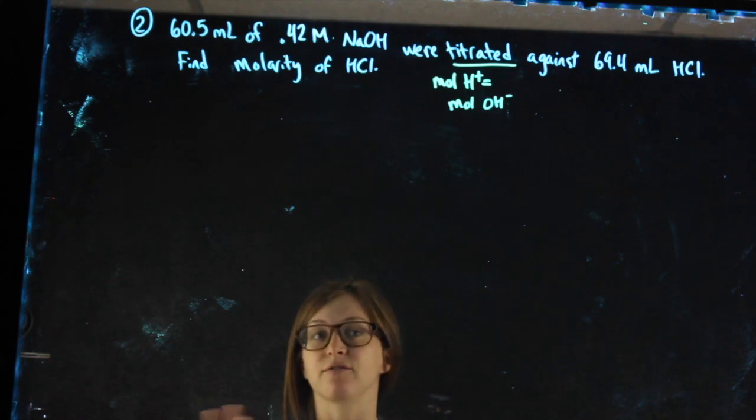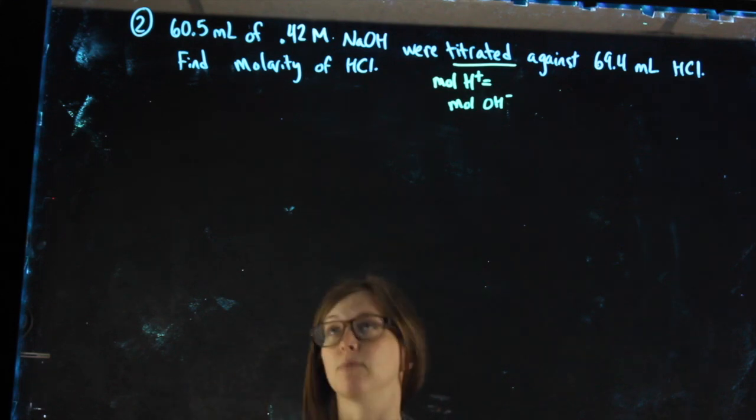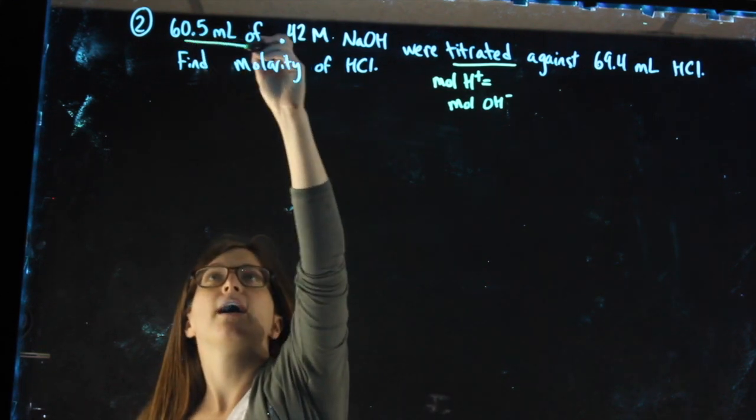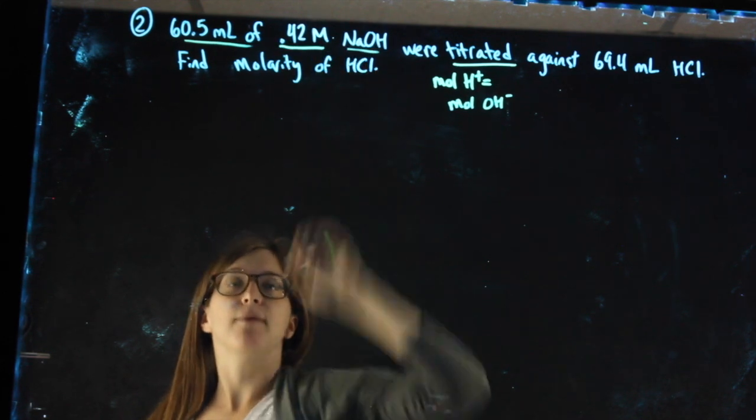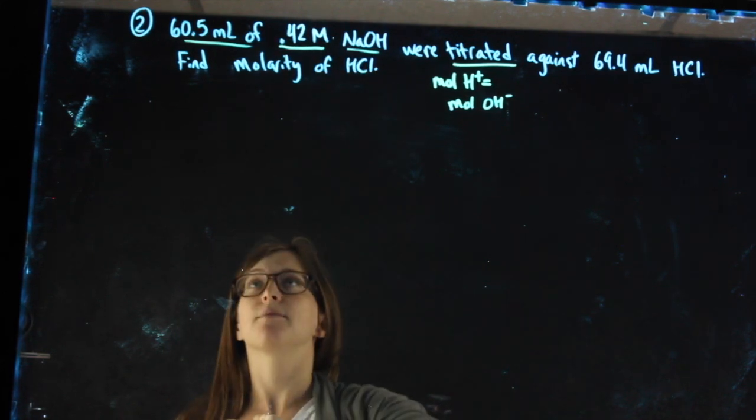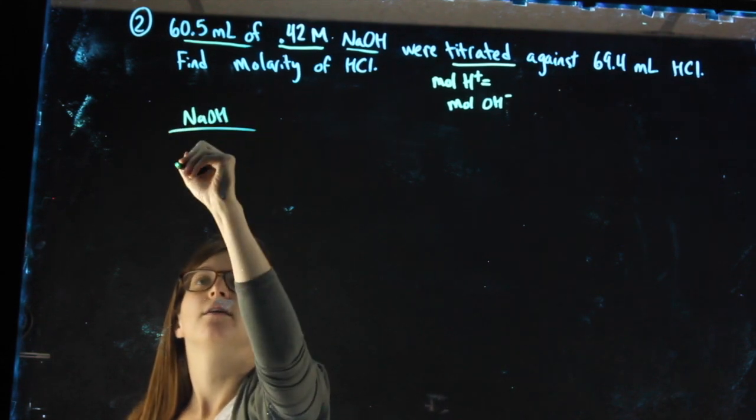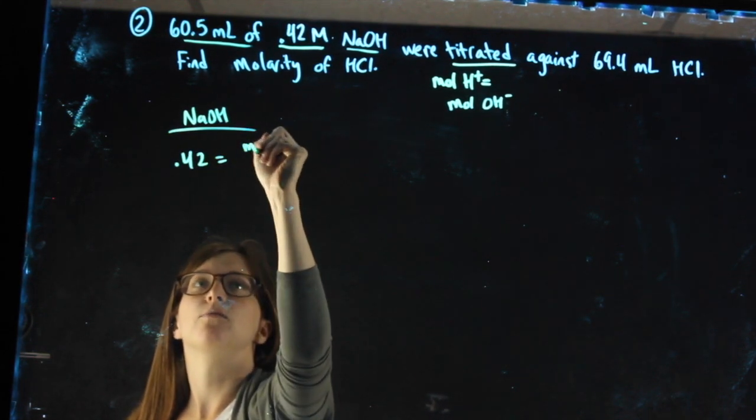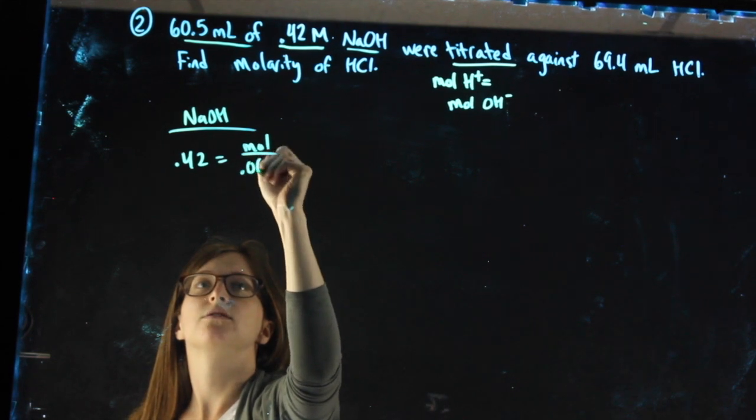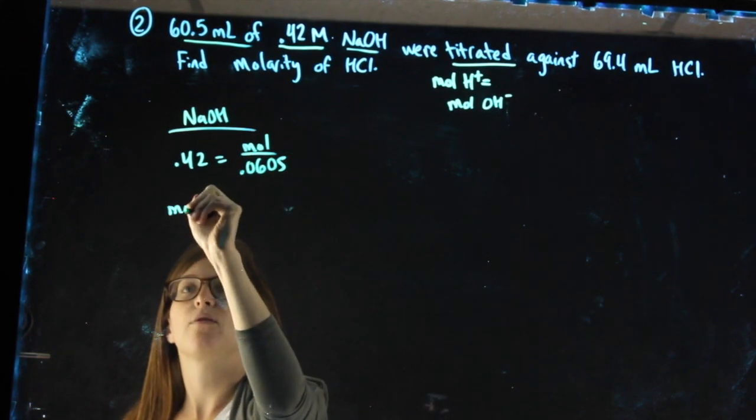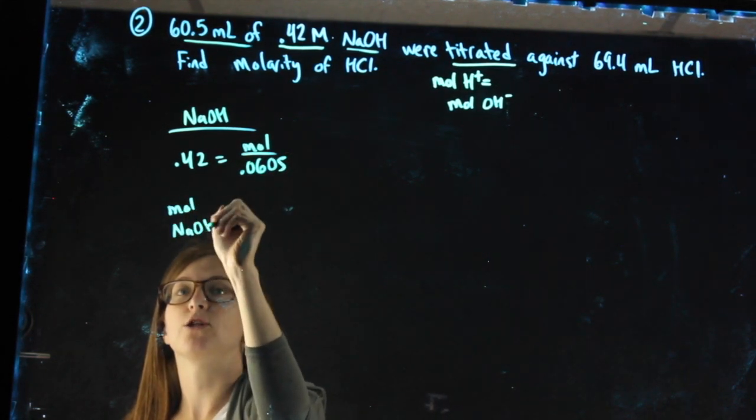Starting wherever I have enough information to get to moles is going to be helpful. So I have the volume and the molarity of my base, my sodium hydroxide. For my sodium hydroxide, molarity equals moles over liters. That will find me my moles of sodium hydroxide.